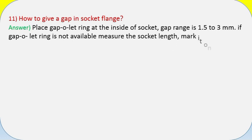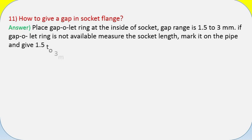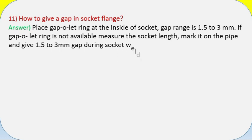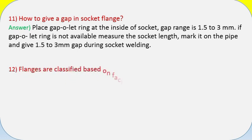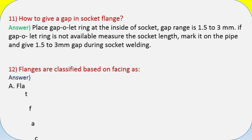Question 11: How to give a gap in a socket flange? Answer: Place a capolet ring at the inside of the socket; gap range is 1.5 to 3 mm. If capolet ring is not available, measure the socket length, mark it on the pipe, and give 1.5 to 3 mm gap during socket welding.